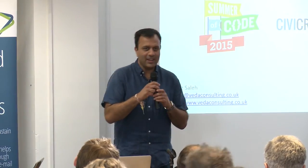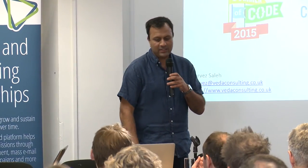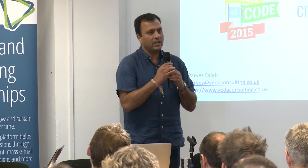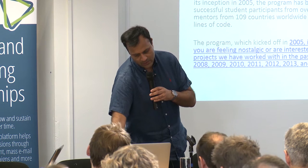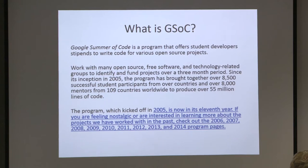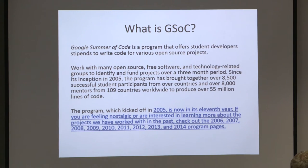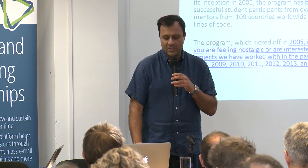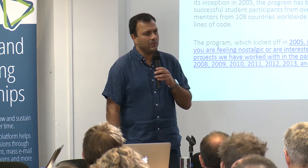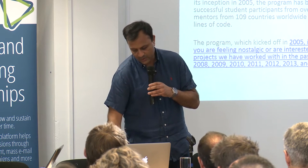Parvez is going to start us off. My lightning talk is about the Google Summer of Code — an update on what we got up to and what happened. For those of you that don't know what the Google Summer of Code is, this is off of the Google Summer of Code website. In a nutshell, it's a program that allows students to sign up for open source and not-for-profit projects and effectively develop software and be paid to do that development. Eight and a half thousand students participated from all over the world. CiviCRM got involved about three years ago, and this is the third year we've been doing it, and we've had quite a few successful projects.